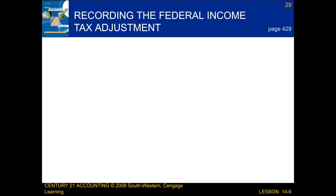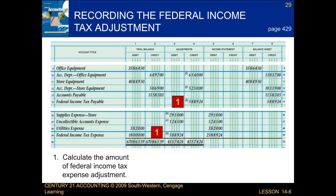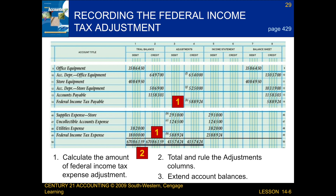Next we're going to be talking about recording the federal income tax adjustment on a worksheet. When we record the federal income tax adjustment on a worksheet, there are a few steps that we follow. First, we calculate the amount of the federal income tax balance expense adjustment. Next, we total and rule the adjustments columns. And finally, we extend the account balances to the balance sheet and income statement columns.